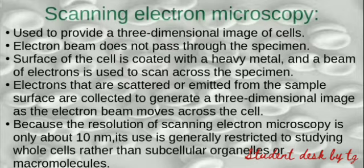In SEM, we do not pass the electron beam through the specimen. Instead, the beam of electrons is used to scan across the surface of the specimen. When electrons are scattered from the sample surface, they are collected and used to create a 3D image of the cell.